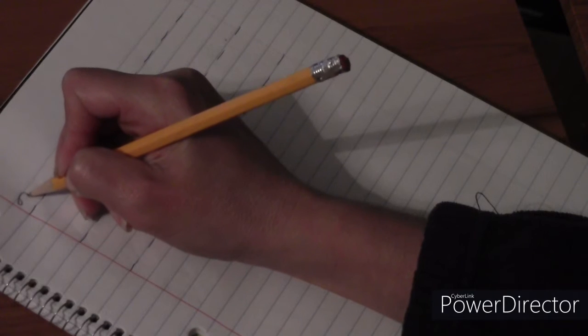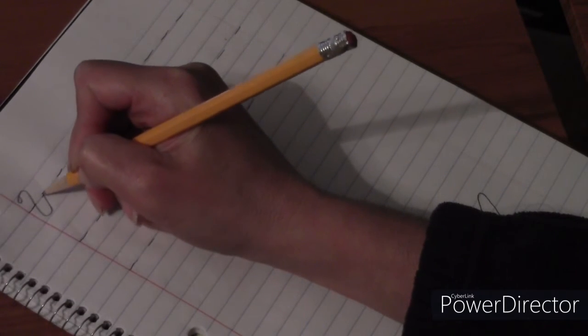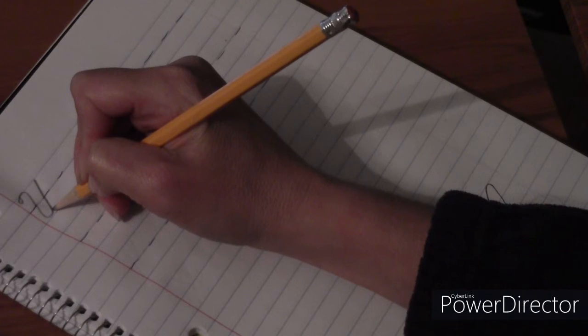So letter Y looks very much like letter U. We started out the same way. So it's got that tiny loop. We go down and curve up. Okay, see how that looks like a letter U?